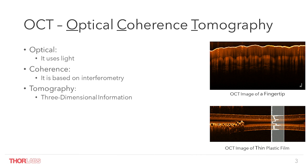First of all, what does OCT mean? It stands for optical coherence tomography. Optical — we use light. Coherence means that we are looking at interference of light waves; this principle allows us to achieve a resolution on the order of just a few microns. And tomography means that we are mapping a region in space. OCT can image 1D profiles, 2D areas, and even 3D volumes at or below the surface of a sample.